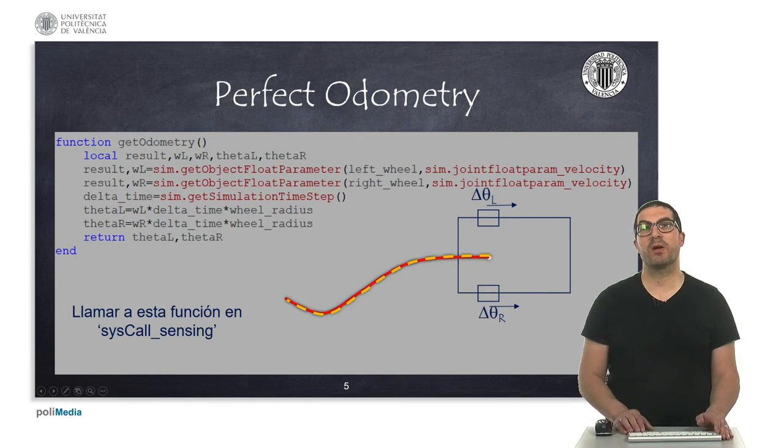We must call this function somewhere in the syscall sensing function. So we need to update these values on each simulation step.